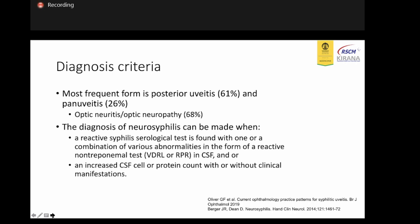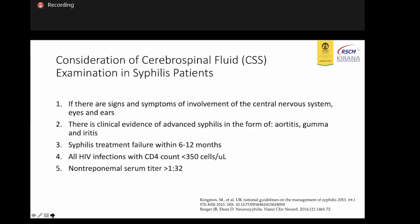The diagnosis of neurosyphilis can be made when a reactive syphilis serological test is followed by one or a combination of various abnormalities: a reactive non-treponemal test like RPR from CSF, CSF pleocytosis, and elevated CSF protein. This is especially relevant if there are signs and symptoms of central nervous system involvement, or in patients with HIV.